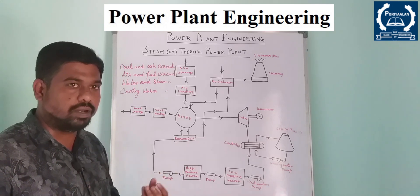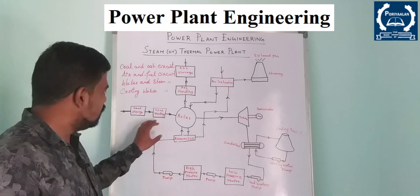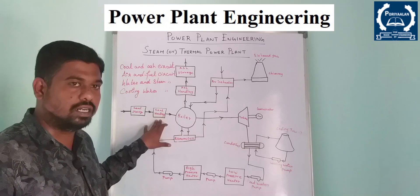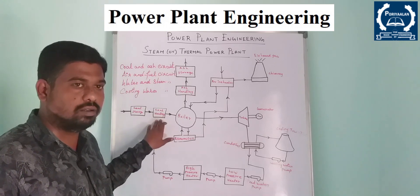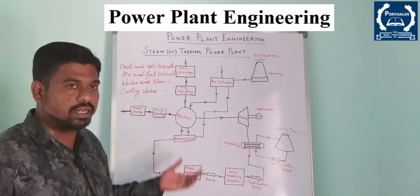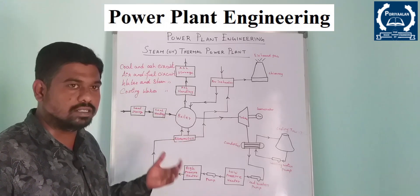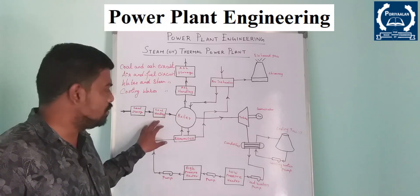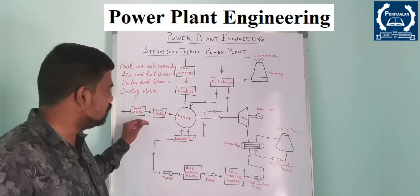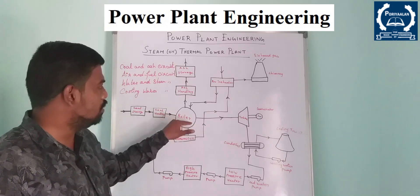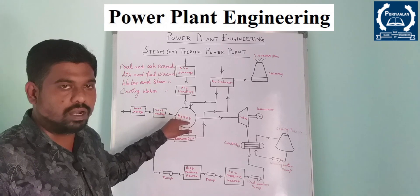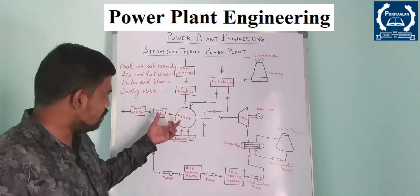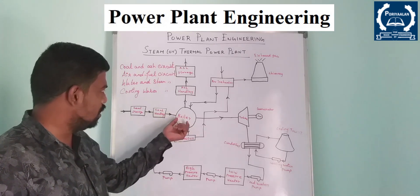First is coal handling. Coal handling equipment feeds the coal to the boiler with the boiler feed. It can feed the coal to the boiler system.